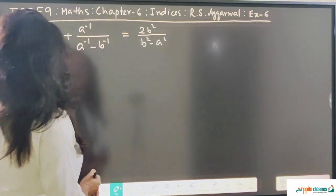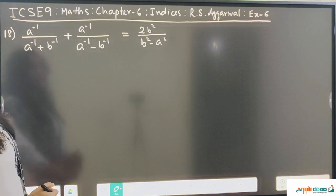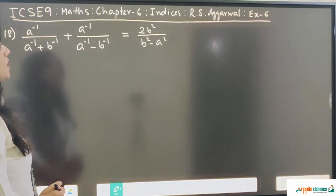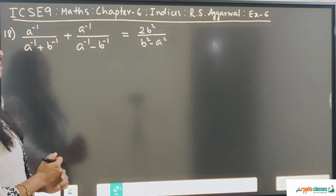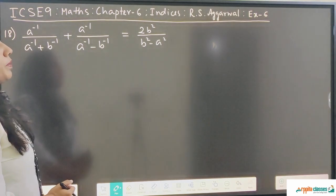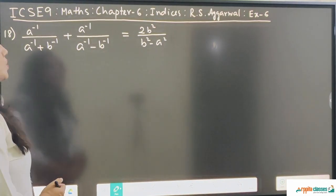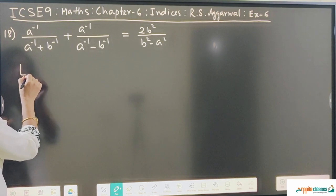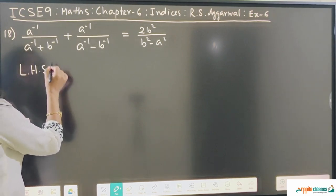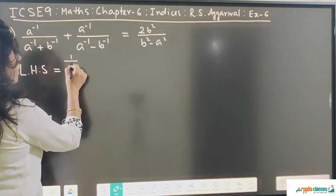Question number 18: a to the power minus 1 upon a to the power minus 1 plus b to the power minus 1, plus a to the power minus 1 upon a to the power minus 1 minus b to the power minus 1, equals 2b squared divided by b squared minus a squared. This is a proof sum. Let us take the left hand side first. a to the power minus 1 can be written as 1 upon a.